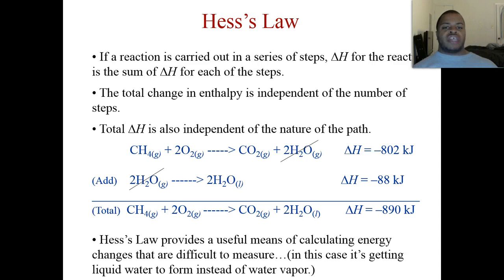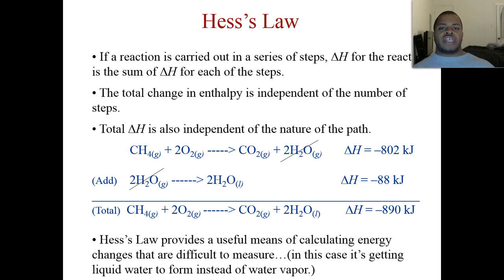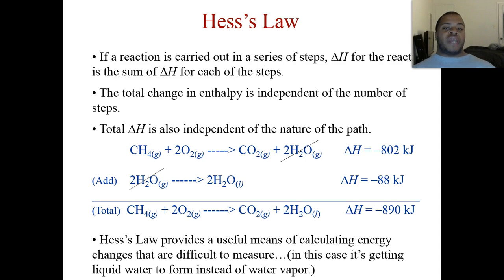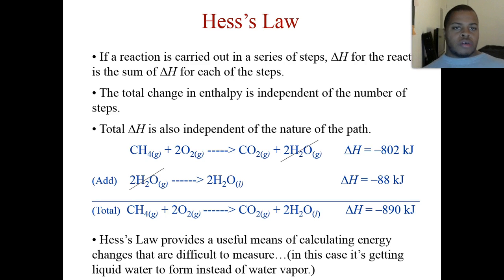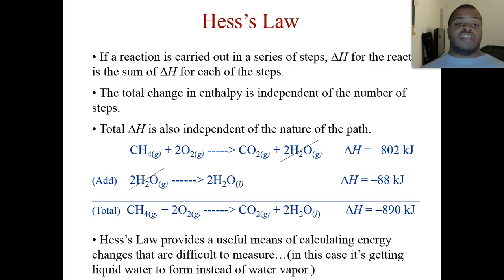What happens if the overall reaction is not carried out in one step but takes multiple steps to get the final information? Then we apply what's called Hess's Law. Hess's Law says: if a reaction is carried out in a series of steps, the delta H for the overall reaction is the sum of the delta H values for all those steps. It's independent of the number of steps — just based on the amount of energy in each step.